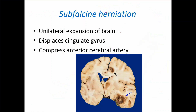Subfalcine herniation represents unilateral expansion of the brain — seen clearly in this coronal section with the lateral ventricles visible. It displaces the cingulate gyrus and compresses the anterior cerebral artery.